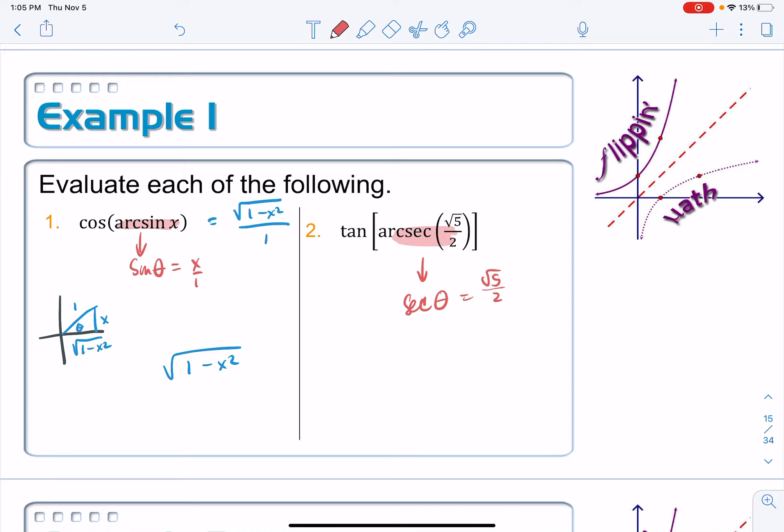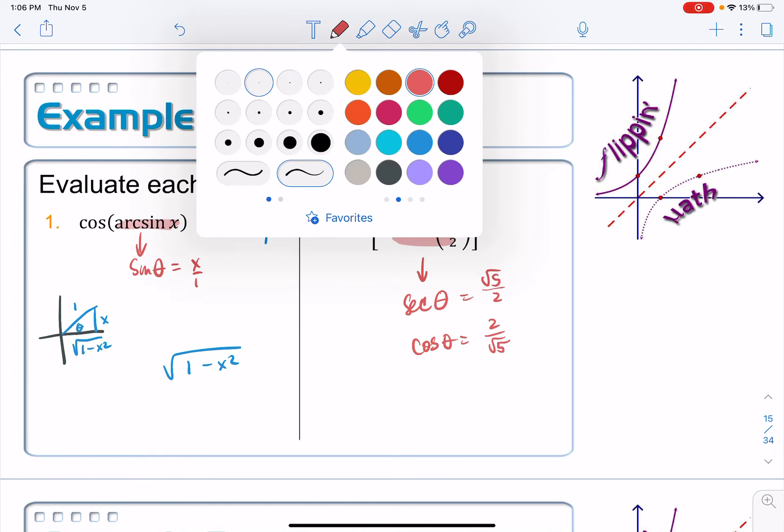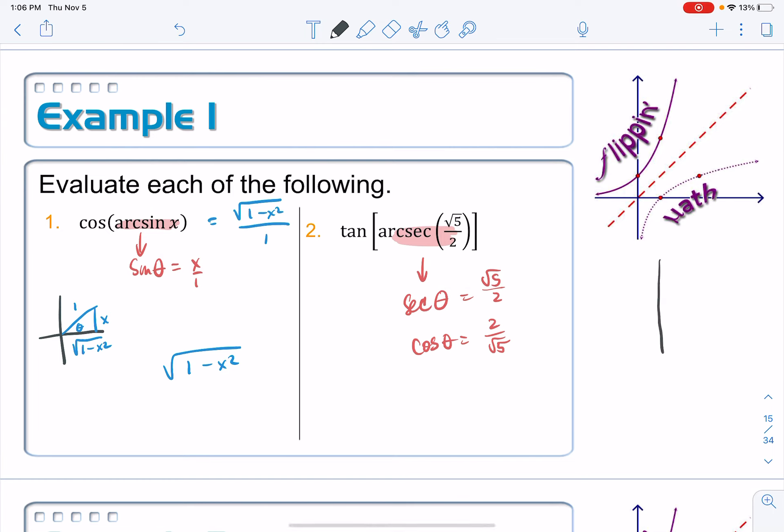The secant of something is equal to the square root of 5 over 2. I don't know about you, but I'm going to think of this instead as 1 over cosine. So the cosine of our angle is equal to the reciprocal of that, which is 2 over the square root of 5. Do not bother to rationalize that. We don't care. Just leave it like that. I'm going to draw myself a triangle.